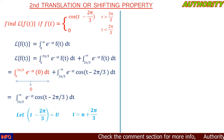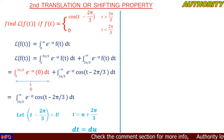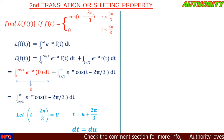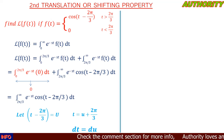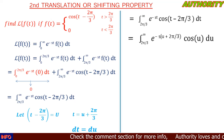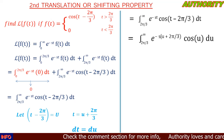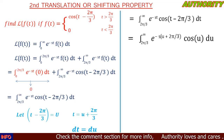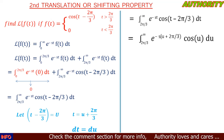With t = u + 2π/3, we substitute into the integral. The limits remain from 2π/3 to infinity. In place of t in the exponent we write u + 2π/3, and in place of cos(t − 2π/3) we write cos(u), giving the integral of e^(−s(u + 2π/3)) cos(u) du.